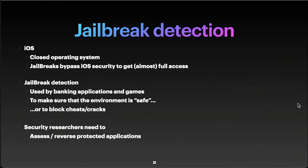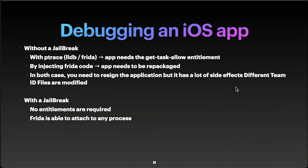How does debugging in iOS applications work? Without a jailbreak, it's performed via ptrace using LLDB or Frida debuggers. To allow ptrace, we need to get the task-allow entitlement. By injecting any code, we need the app to be re-signed. In both cases, you need to resign the application, but it has a lot of side effects: different Team ID and modified files. If there is integrity checking in the application, it will be corrupted.